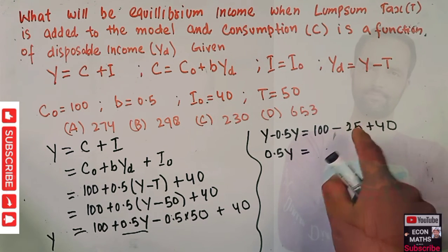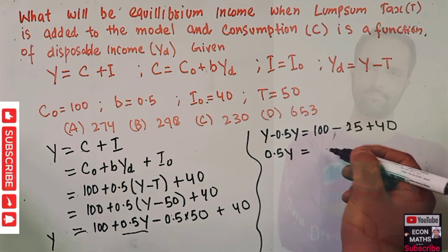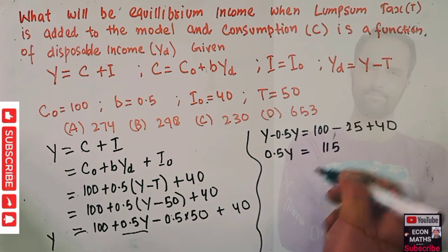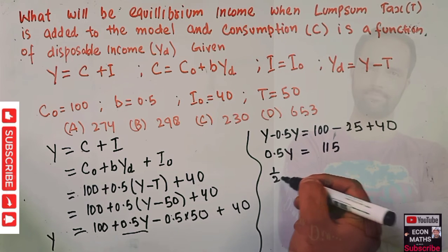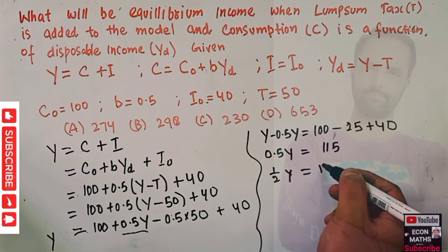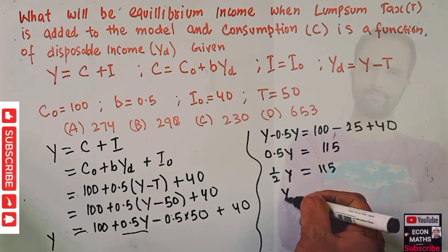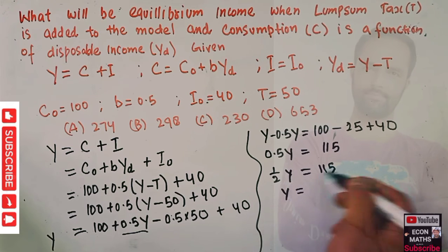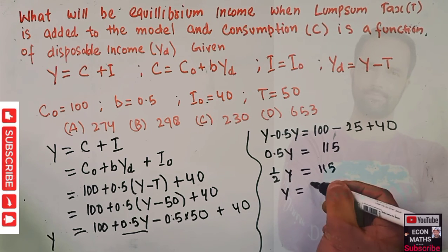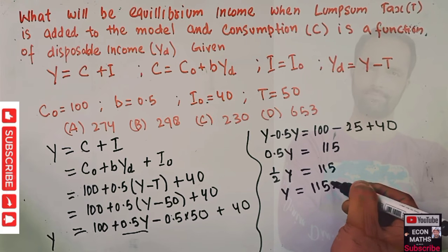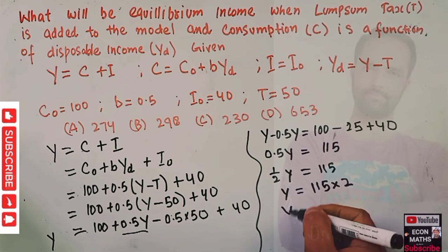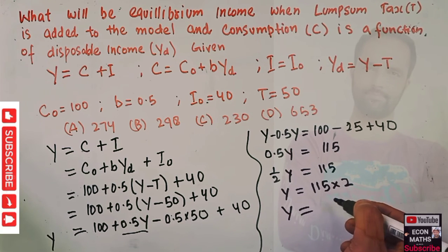So 0.5 Y equals 115. We can write 0.5 as 1 upon 2, so one-half Y equals 115. Therefore Y equals 115 times 2. Transposing, we multiply and reciprocate: 115 times 2.